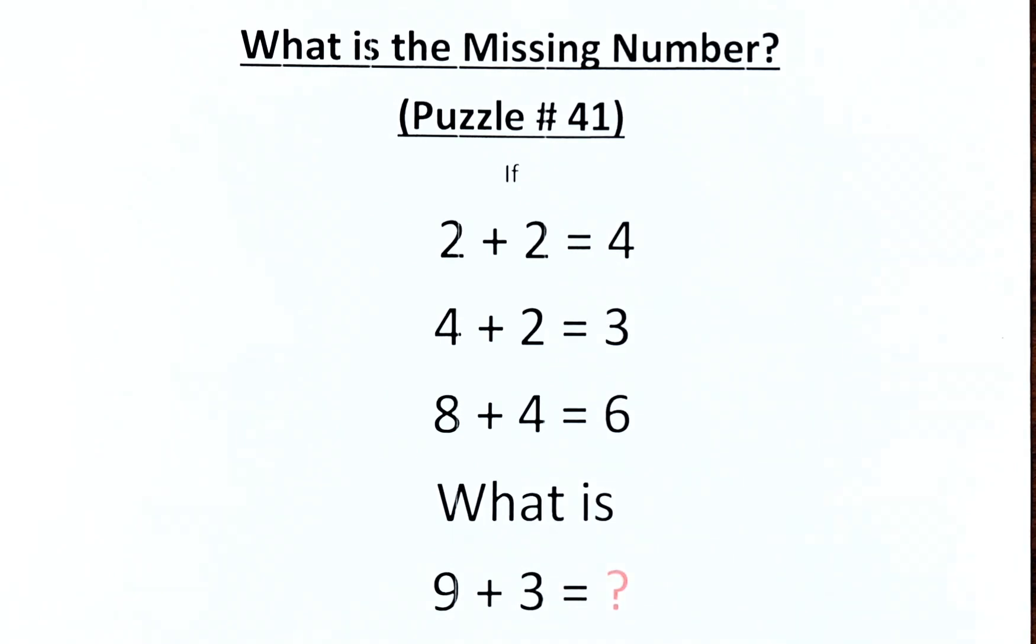So we'll leave the first line, 2 plus 2 equal to 4, for the moment. We are going back to line number 2: 4 plus 2 equal to 3.